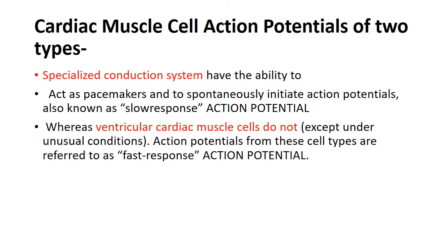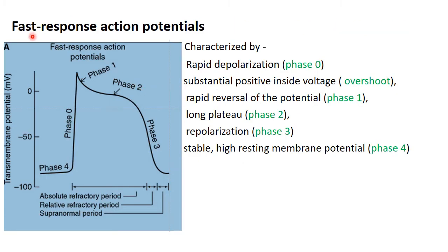Fast response action potential is characterized by phase 4 first, then phase 0, which is the depolarization phase, followed by phase 1 initial repolarization, then plateau phase 2, then repolarization phase 3, and then phase 4 again as resting membrane potential. The depolarization phase in fast response occurs acutely — you will find a steep, straight-line rise on the curve.